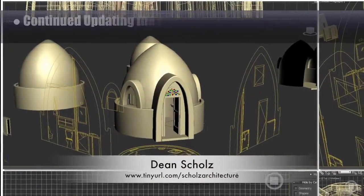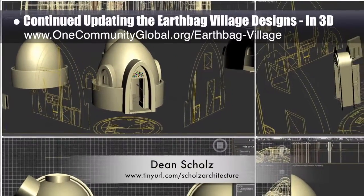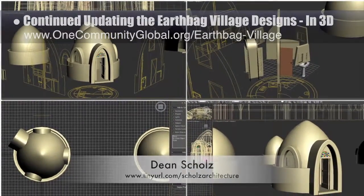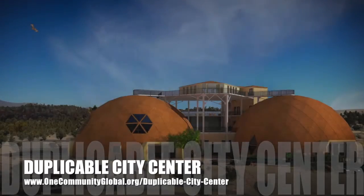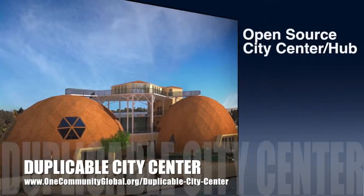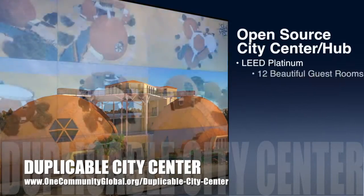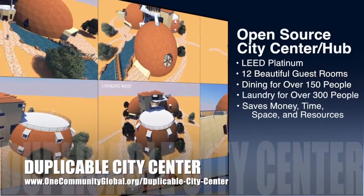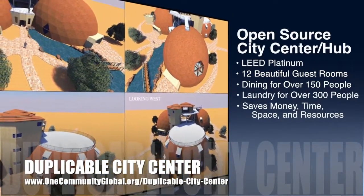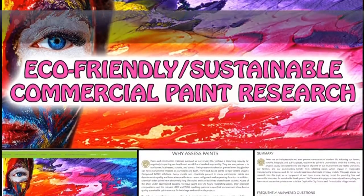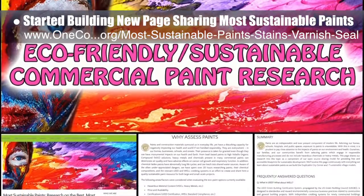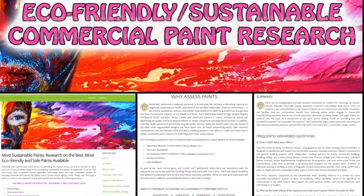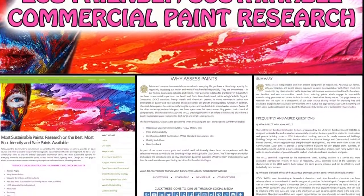You can see some of this work in progress here. Dean Schulz, architectural designer, continued working on the Earthbake village — this week's focus was finishing the 3D model updates to the entryway and windows. One Community is also creating an open source duplicable city center, and this week the core team started building a new page sharing the best, safest, and most sustainable paints — creating the initial page setup, header, social media images, and writing the why summary and FAQ sections.